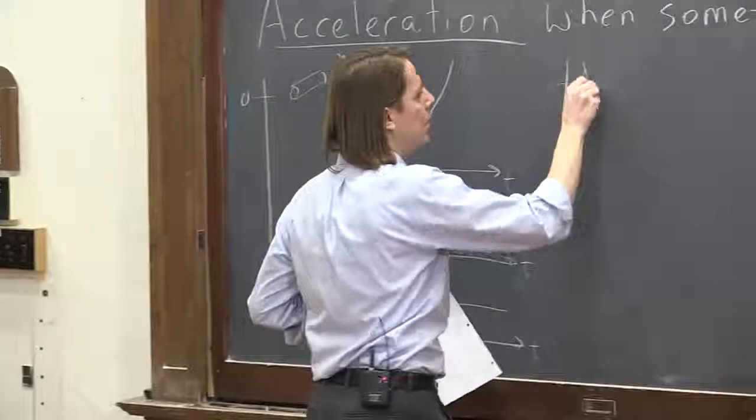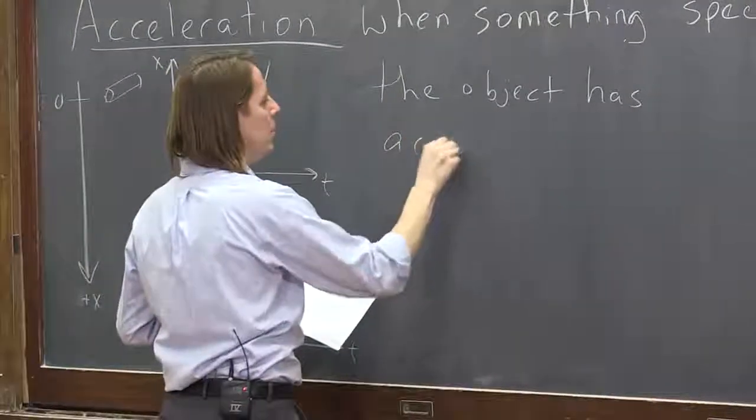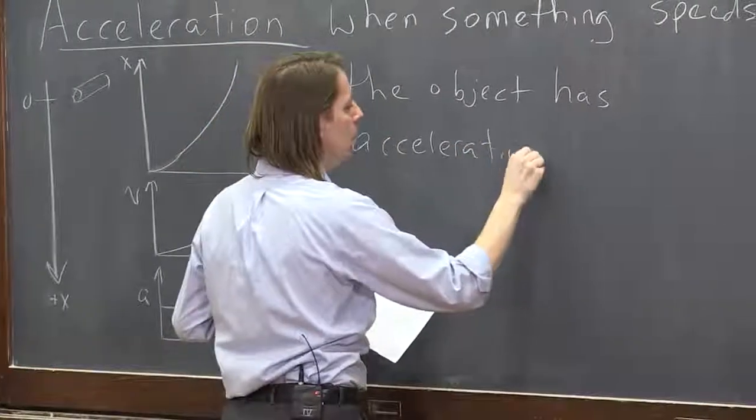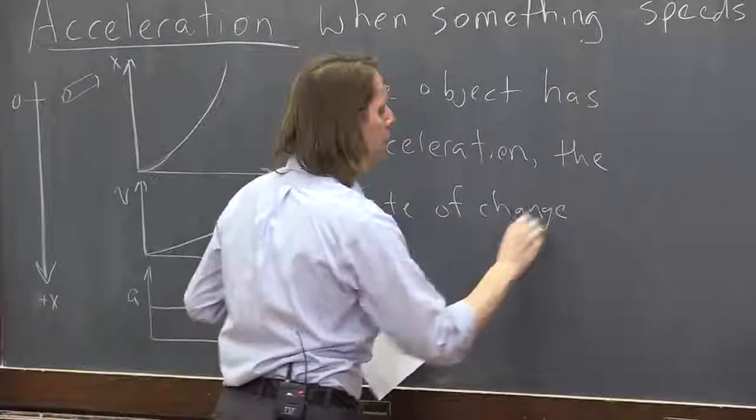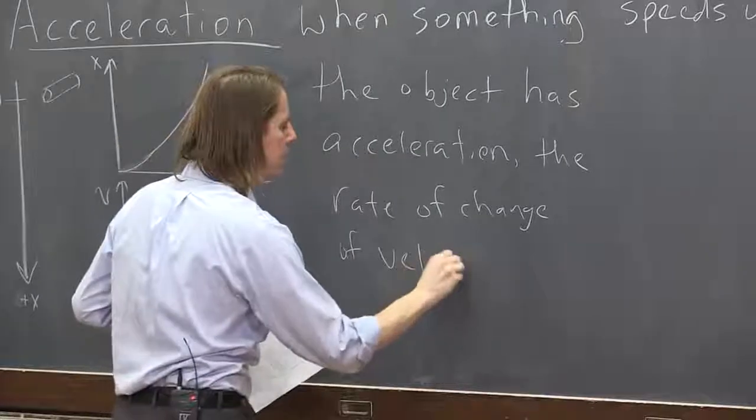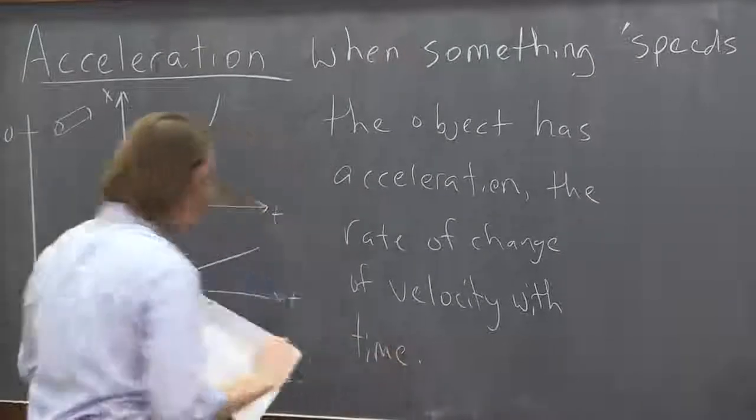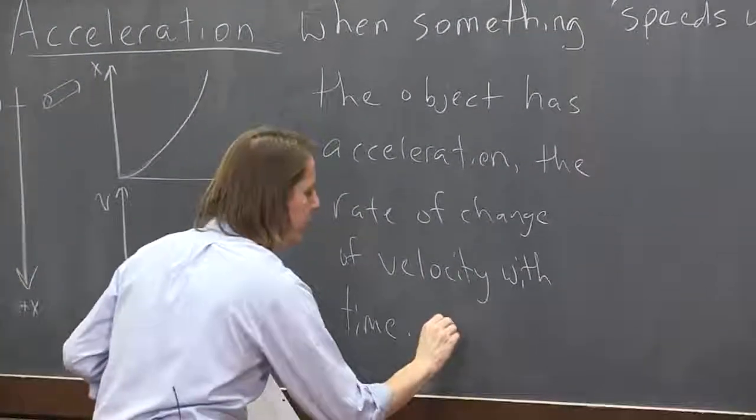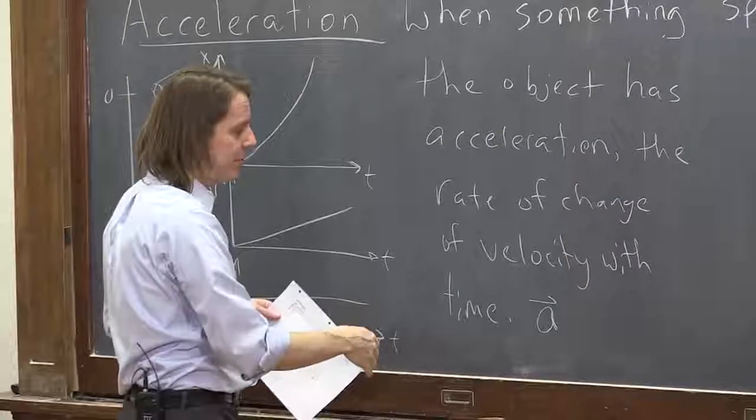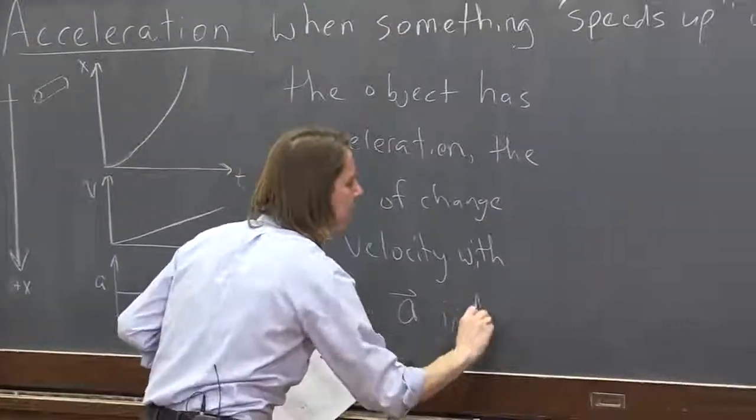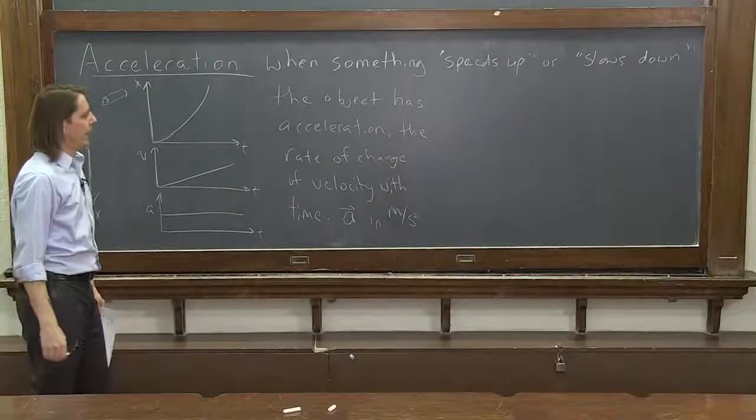So let's say the object has acceleration, which, a more technical definition, is the rate of change of velocity with time. We denote it with an A. It is, of course, a vector. It is the change of a vector, so it also has to be a vector. And in the MKS unit is meters per second squared. That's it.